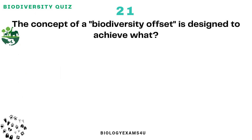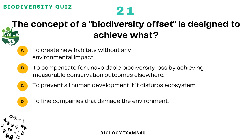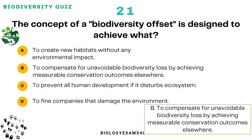Question number 21: The concept of a biodiversity offset is designed to achieve what? Option A: To create new habitats without any environmental impact. Option B: To compensate for unavoidable biodiversity loss by achieving measurable conservation outcomes elsewhere. Option C: To prevent all human development if it disturbs ecosystems. Option D: To fine companies that damage the environment. The correct answer is: biodiversity offset is to compensate for unavoidable biodiversity loss by achieving measurable conservation outcomes elsewhere.